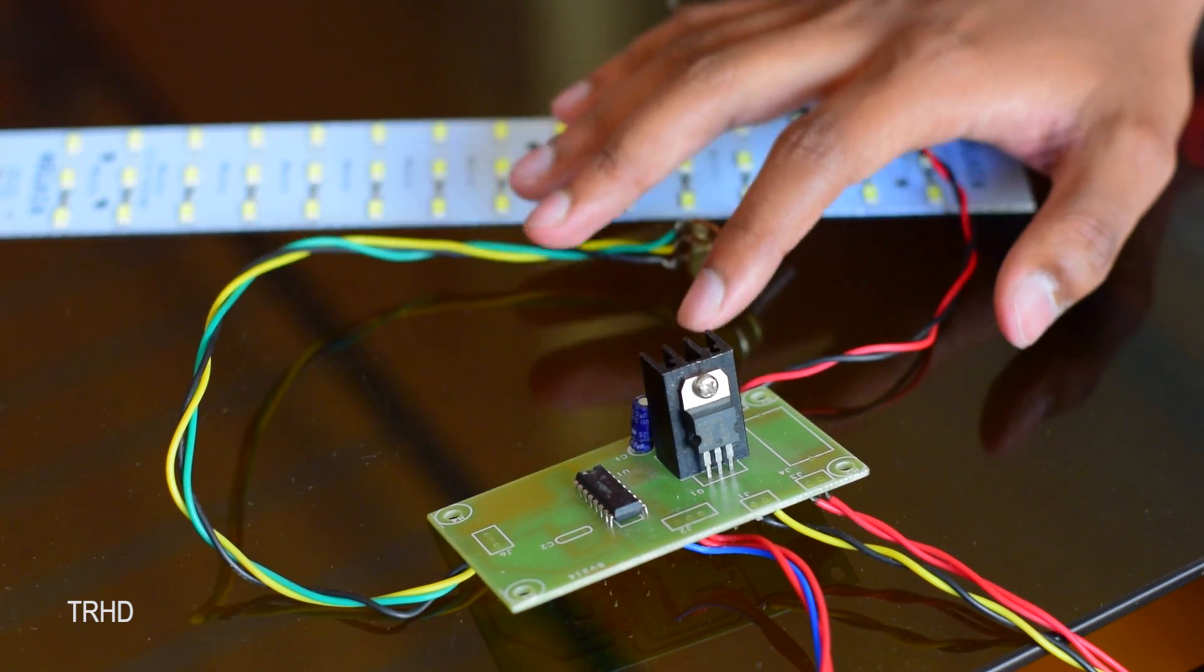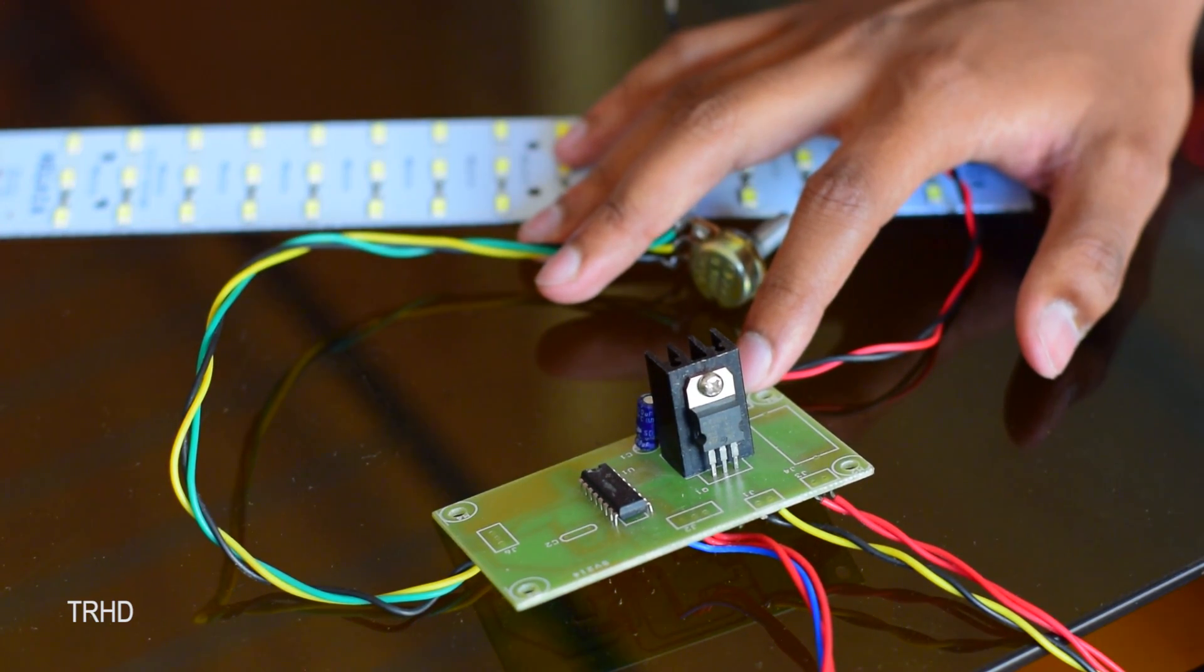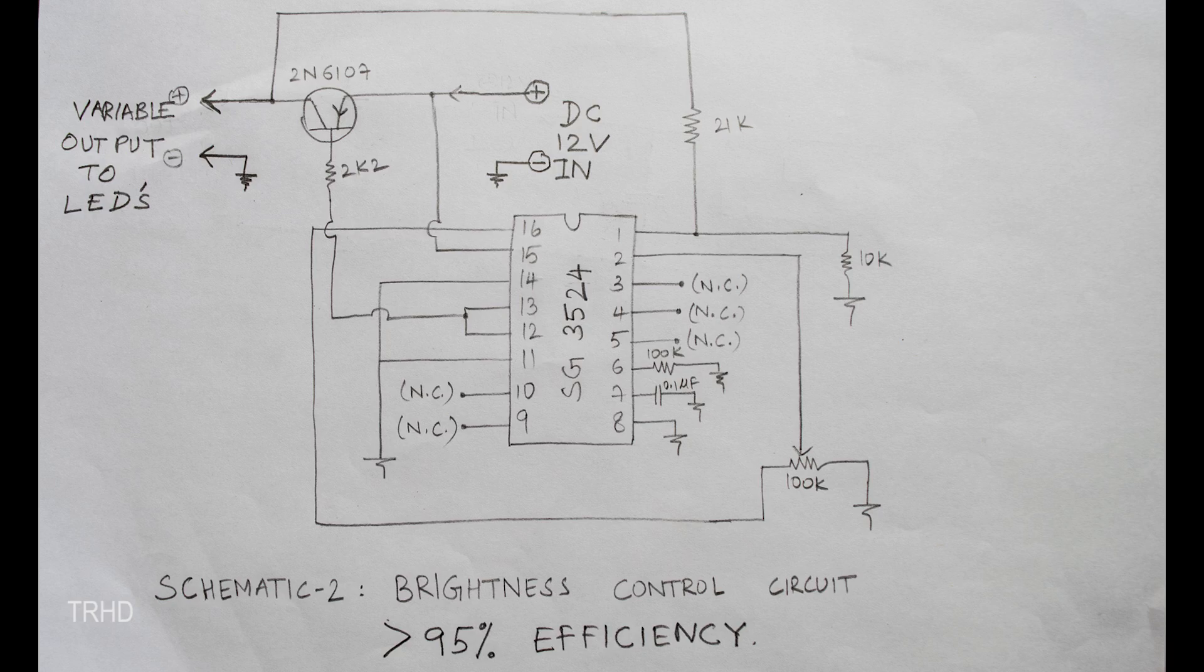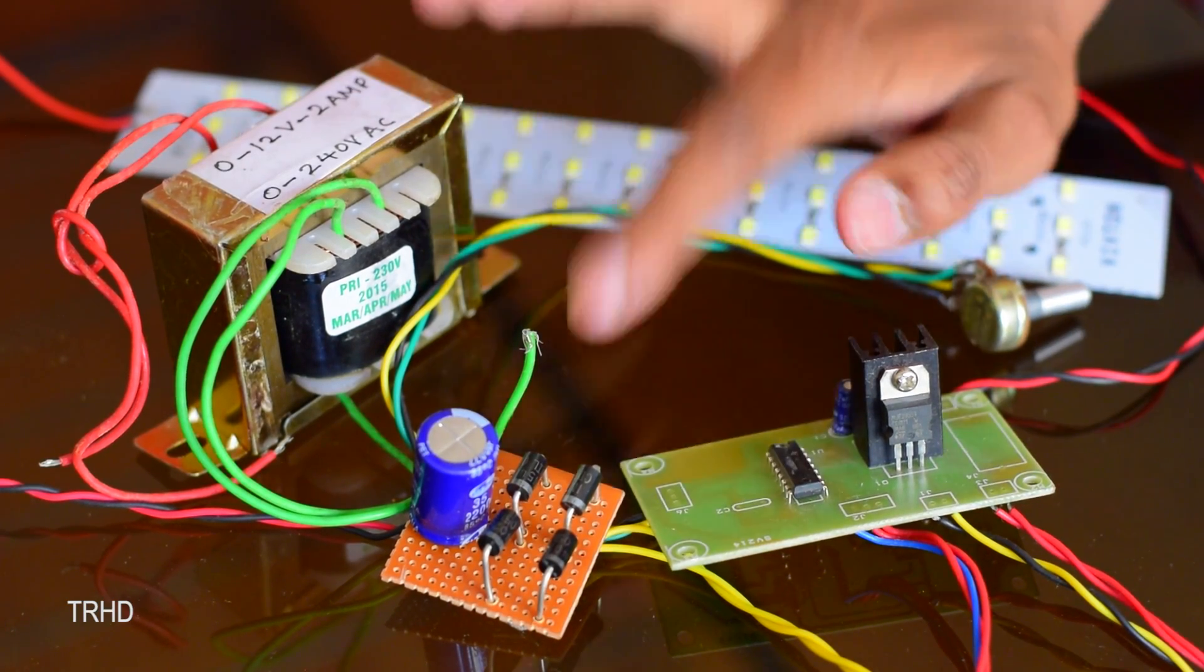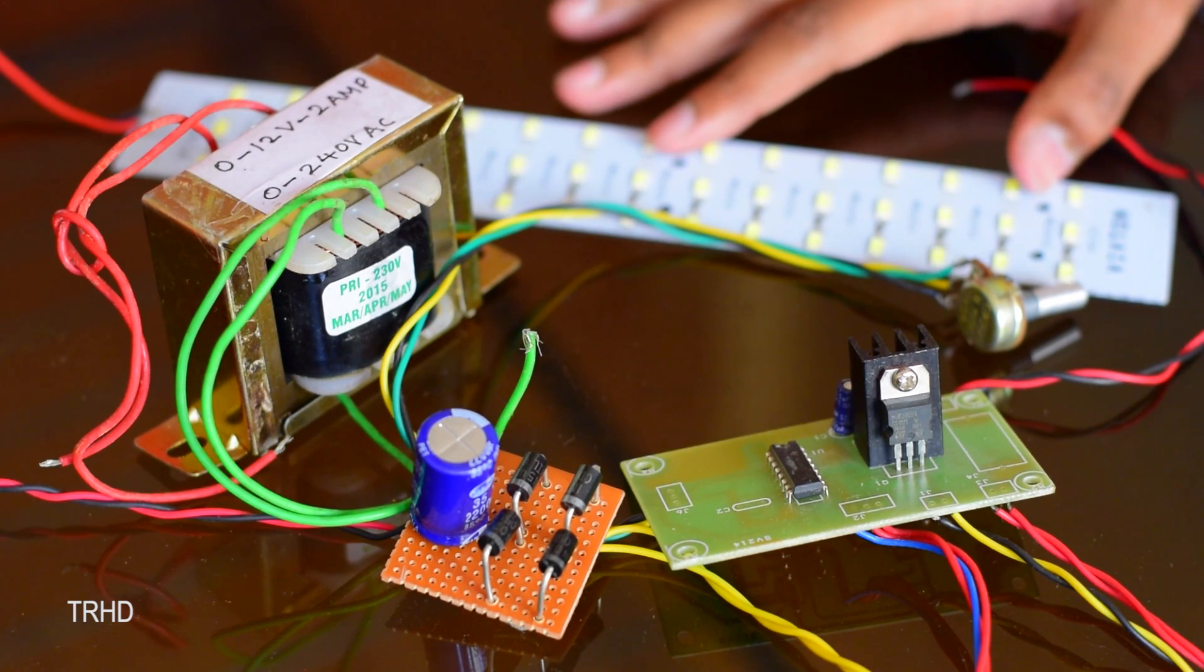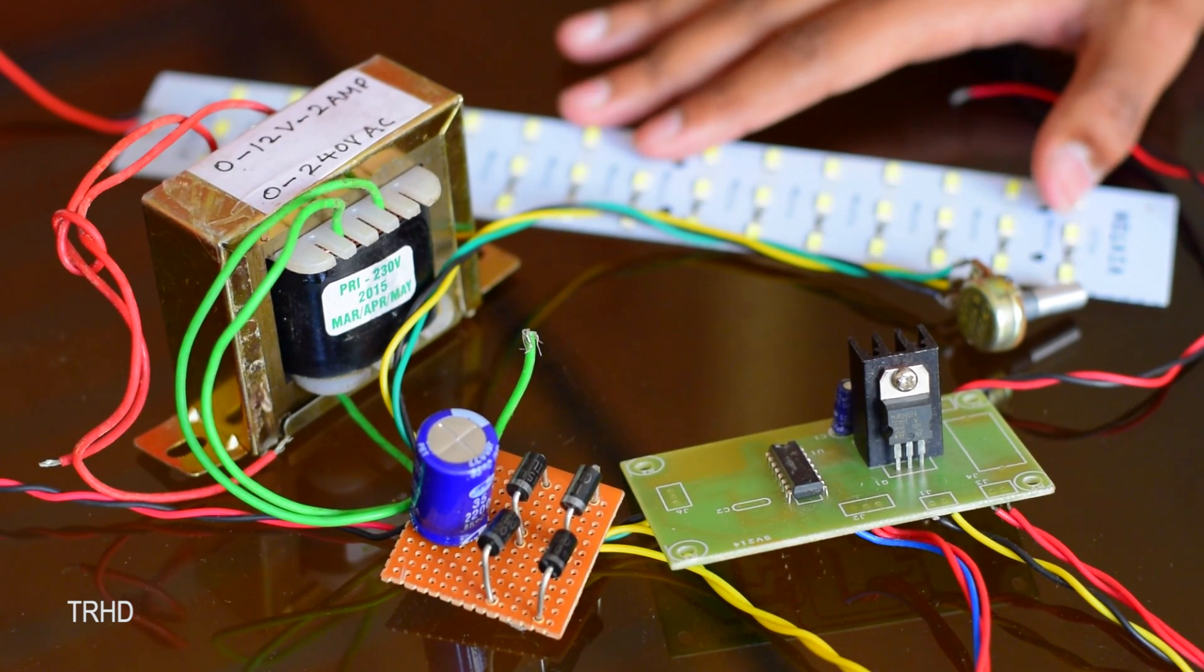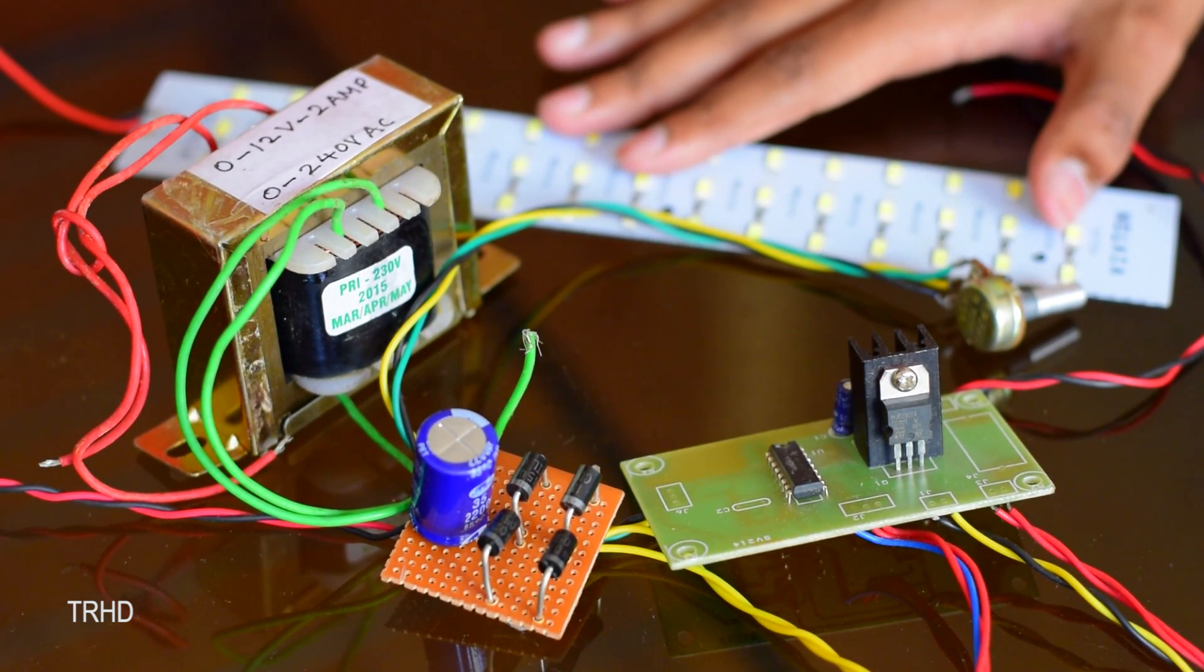Now I will show you the schematic of this brightness control circuit. Just have a look at it. Including this brightness control circuit, the transformer, bridge rectifier and the LED light strip, everything comes under $5 so it is very cheap to make this project.